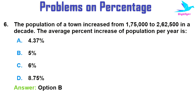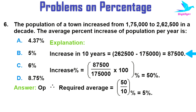Next question: the population of a town increased from 1,75,000 to 2,62,500 in a decade. The average percent increase of population per year is — options are: 4.37%, 5%, 6%, or 8.75%. The right answer is option B: 5%. The increase in 10 years equals 2,62,500 − 1,75,000 = 87,500. The percentage increase = 87,500 / 1,75,000 × 100 = 50 percent. So per year the average increase is 50/10 = 5 percent.